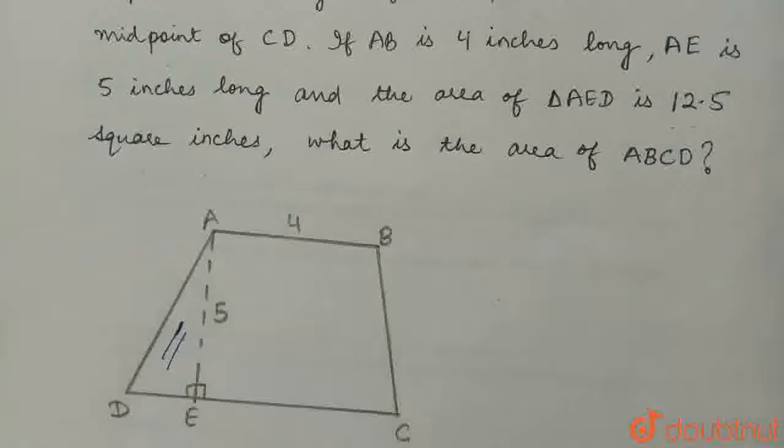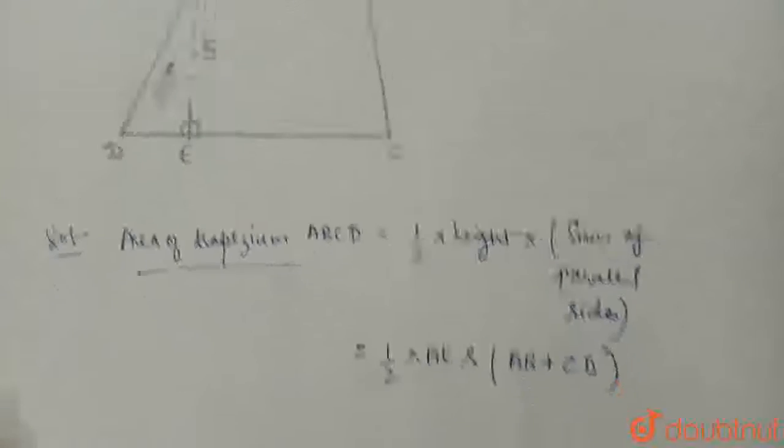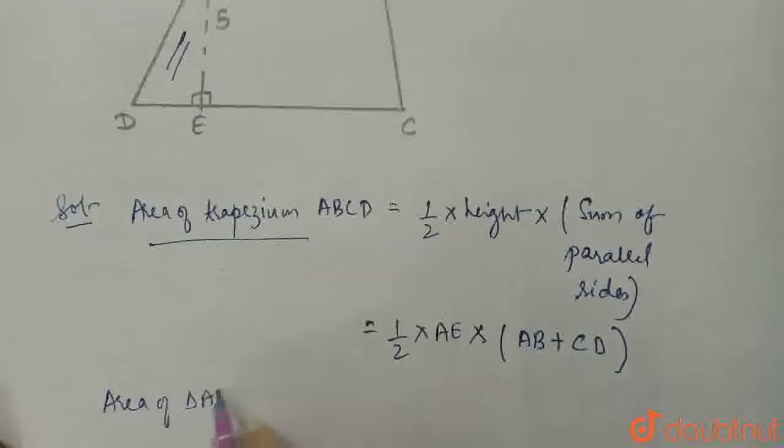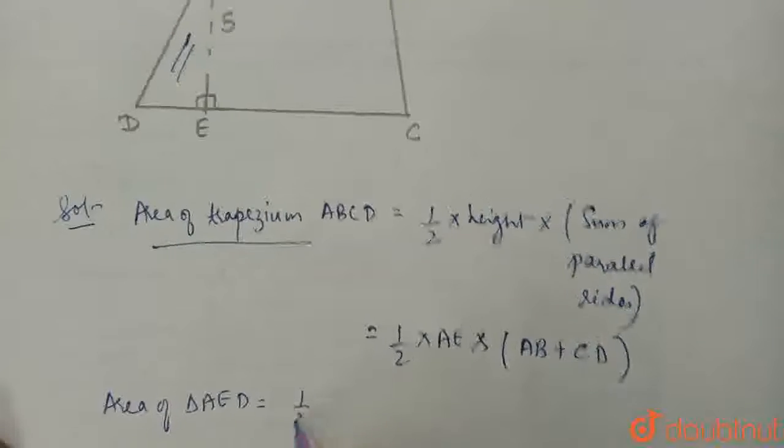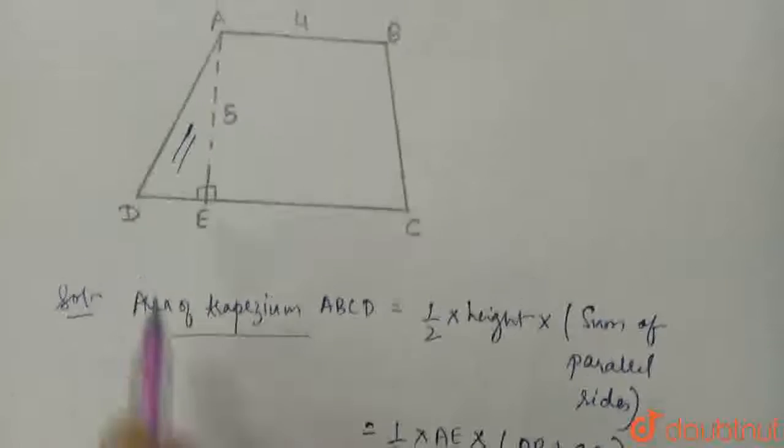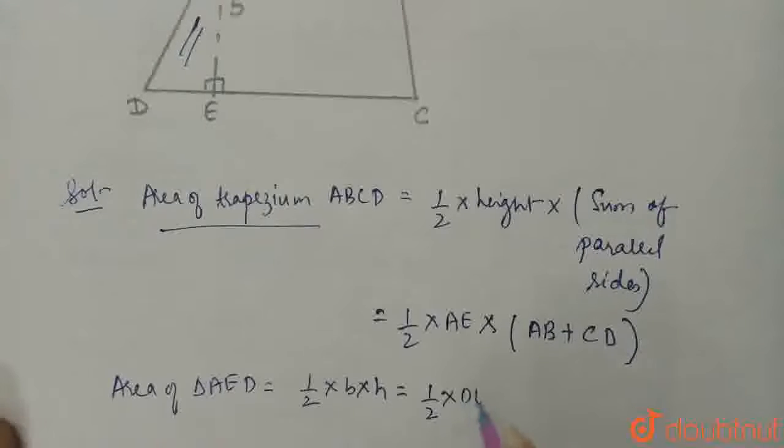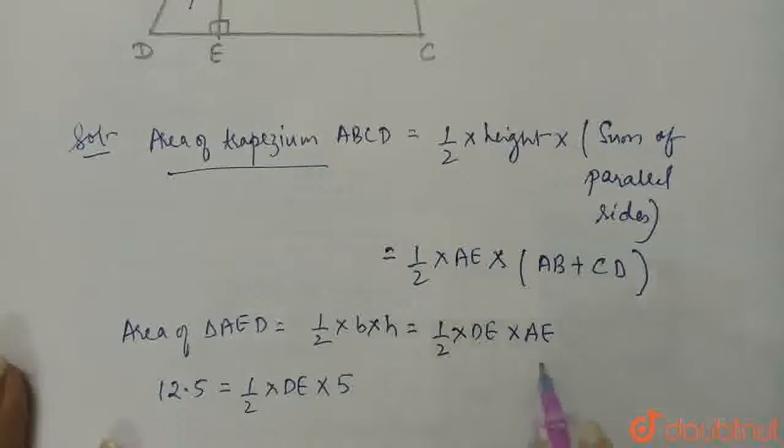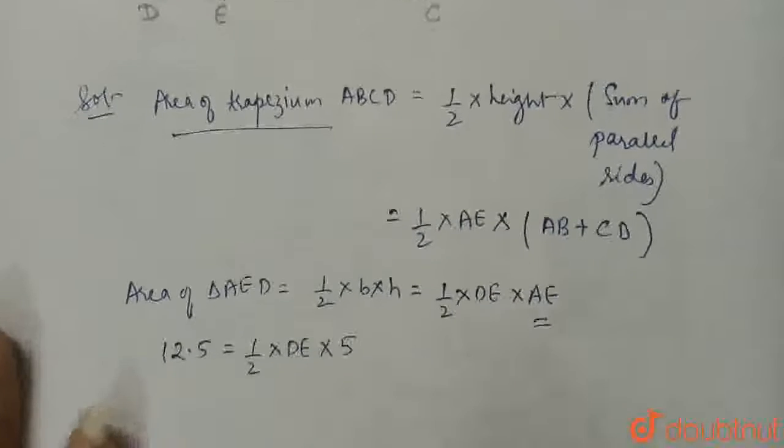The area of this triangle is given. The area of triangle AED equals half base times height, which is half DE times AE. The area is 12.5, which equals half times DE multiplied by 5, the value of AE.